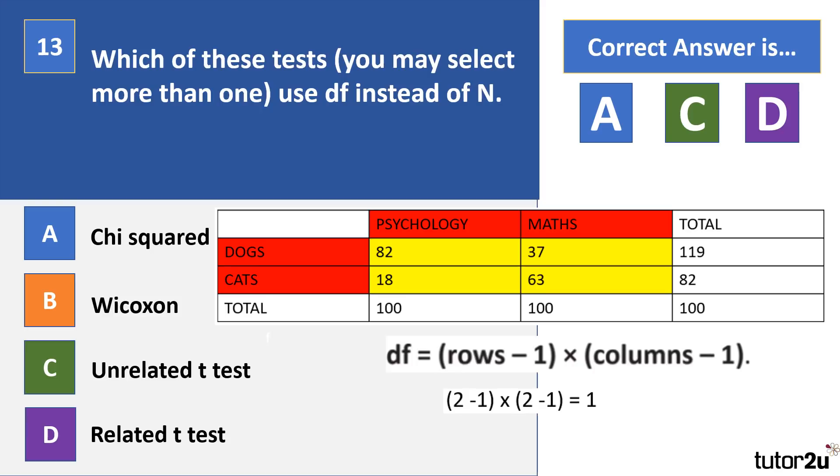Let's take a little look at this. Let's have a look at chi-squared here. In chi-squared, something used is a contingency table that shows the data that you have. So here's a set of data for a piece of research looking to see if there's a difference between the preference of cats or dogs as a pet from psychology and math students. Chi-squared uses df instead of n, and in order to calculate df for chi-squared, you need to do number of rows take away one, multiplied by number of columns take away one.